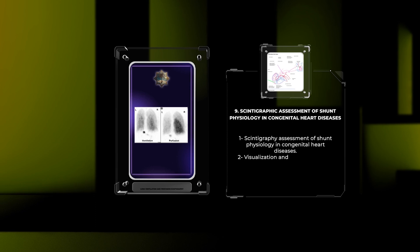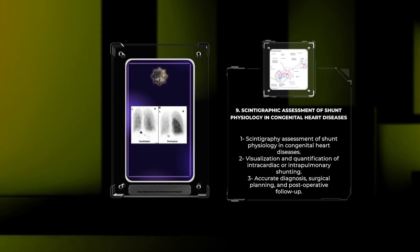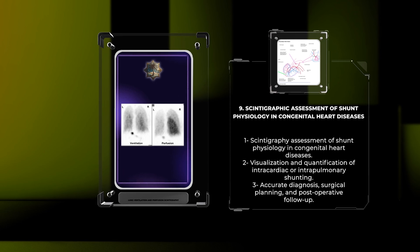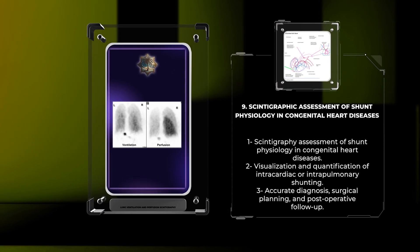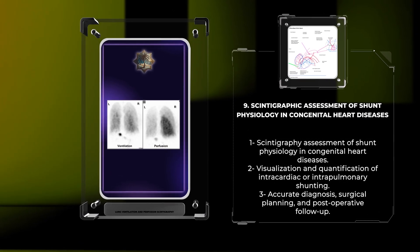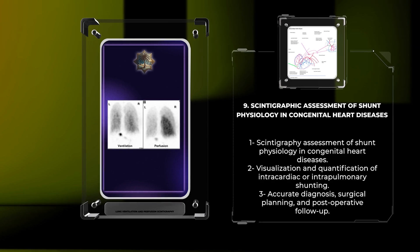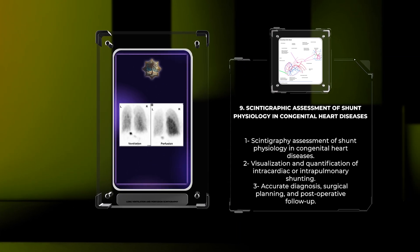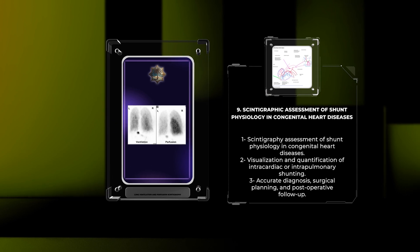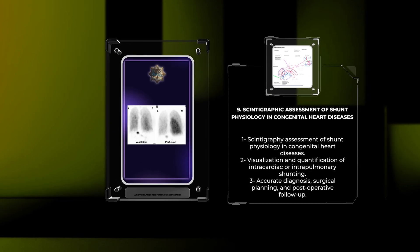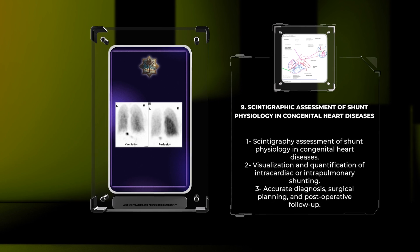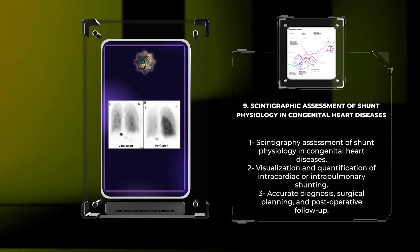Scintigraphy offers a unique perspective in the assessment of shunt physiology and congenital heart diseases. By administering radiopharmaceuticals such as technetium-99m macro-aggregated albumin or microspheres, radiologists can visualize and quantify the presence and degree of intracardiac or intrapulmonary shunting. This information is crucial for accurate diagnosis, surgical planning, and postoperative follow-up of patients with congenital heart diseases, ensuring the best possible outcomes.